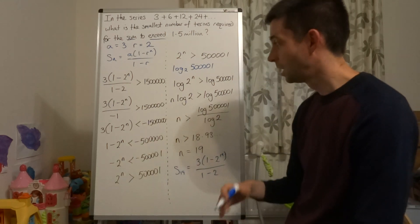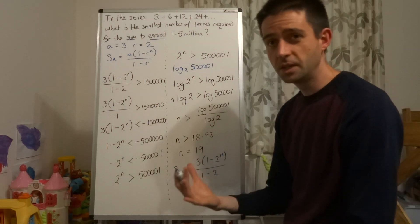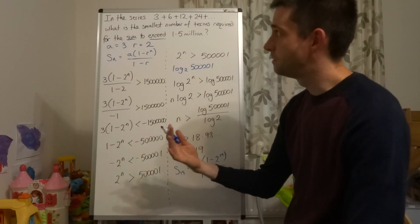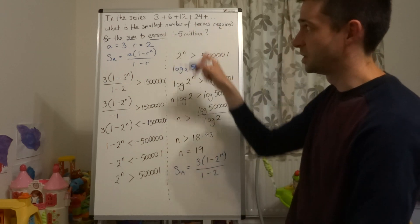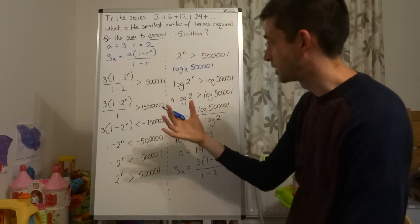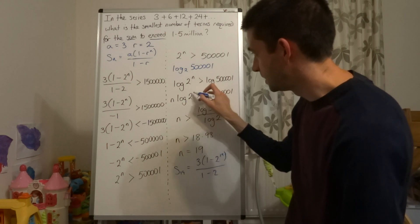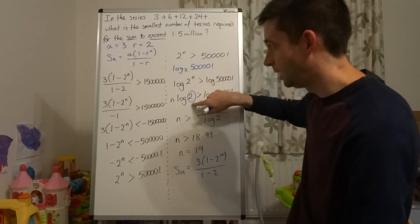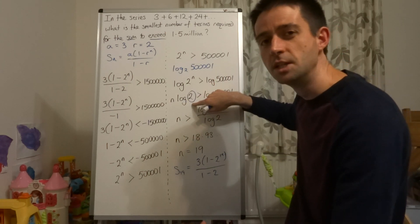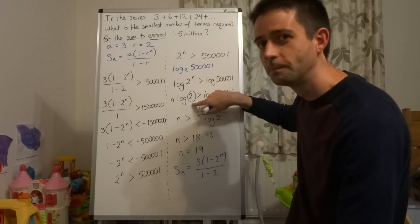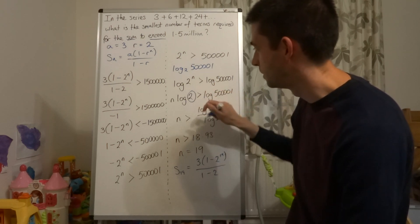So there we go. Just while I'm here, something to be aware of is, if this had been a decreasing series, so your common ratio had been a fraction, then what would have happened is, at this stage here, if you have a fraction, think about what is log of a number less than 1. Let's say for example, if instead of 2, this had been 1 third, you'd have log 1 third there. Well, log of 1 third is negative.